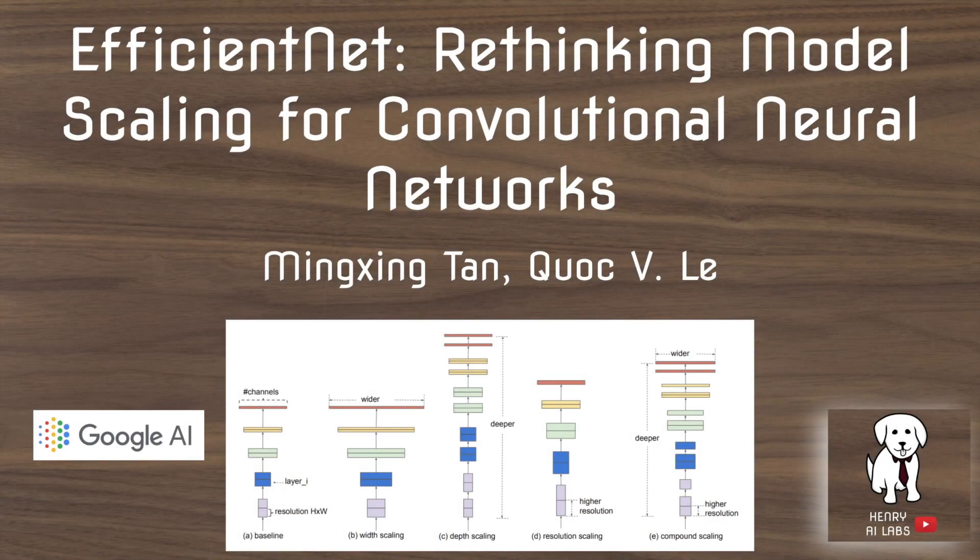This video will present EfficientNet, a new technique achieving state-of-the-art image classification accuracy from Google AI research. This technique rethinks the way that we scale convolutional neural networks up.